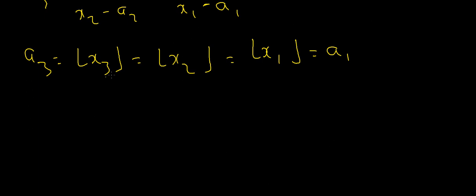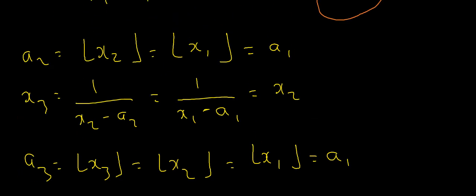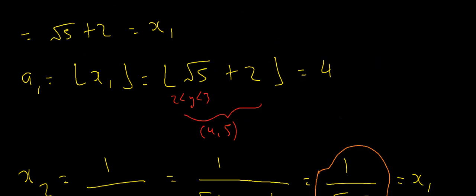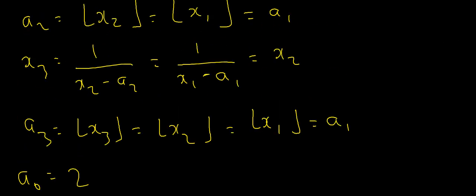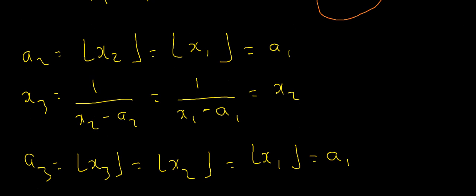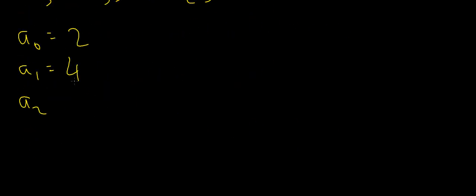Let's recap. First we found a₀, which was just the floor of root 5, equal to 2. Then we found a₁, which had the value 4. We then proved that a₂ had the same value as a₁, so a₂ is also equal to 4. Therefore a₃ is also equal to 4, a₄ is also equal to 4, and so on and so forth.